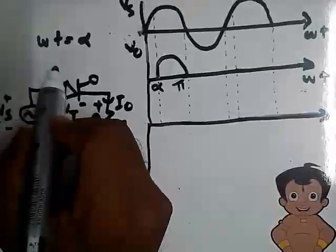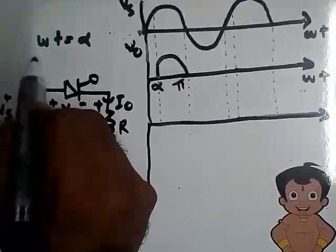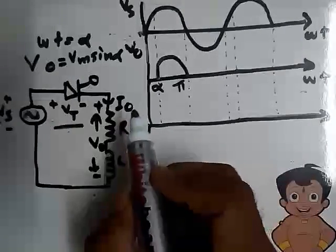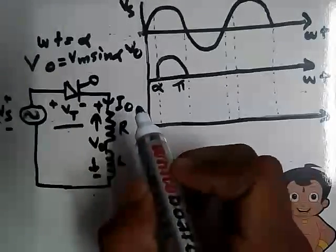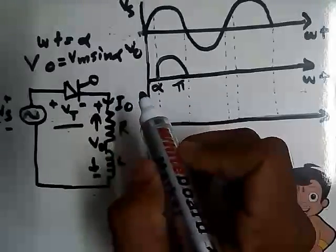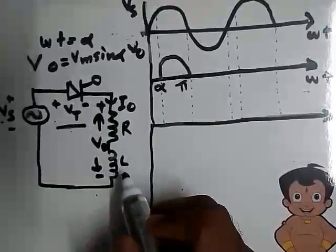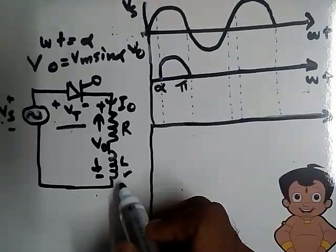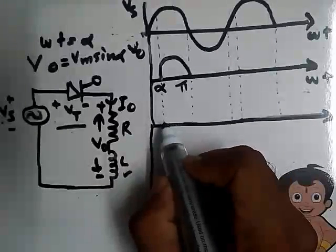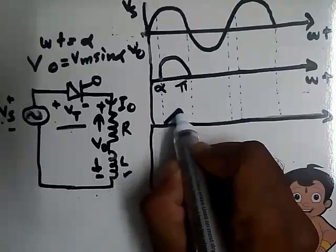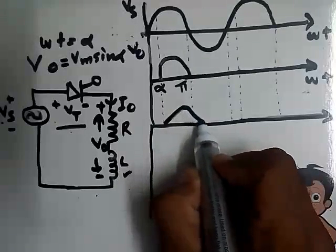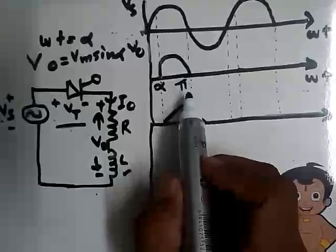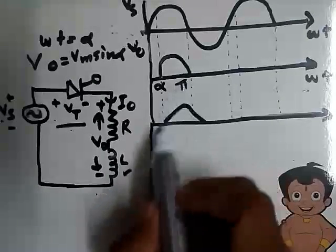At ωt = α the output voltage V0 is Vm sin(α). But current doesn't rise quickly as in a pure resistive load, because of the presence of the inductor. The inductor opposes sudden changes in current, so the current increases gradually, reaches a peak, then decays to zero — unlike the pure resistive load case.